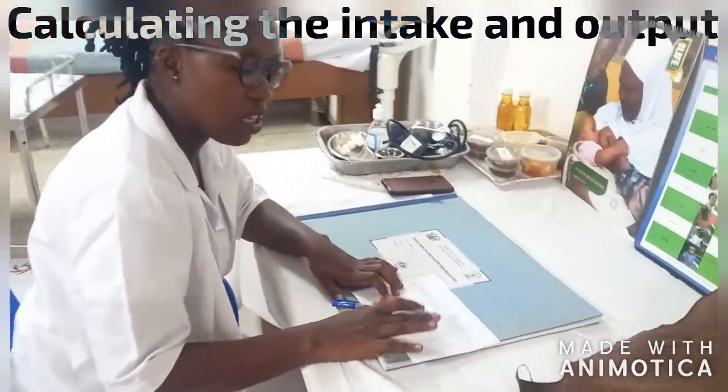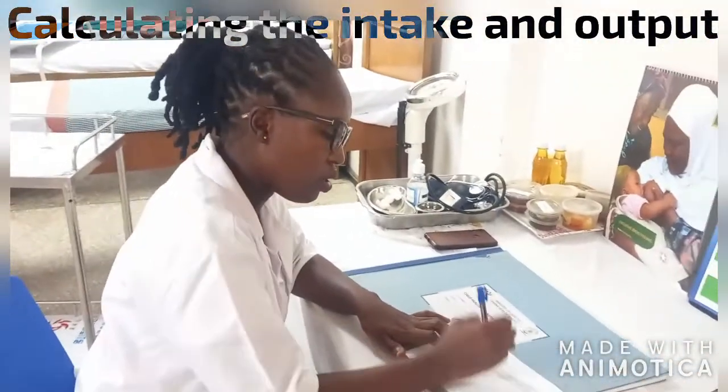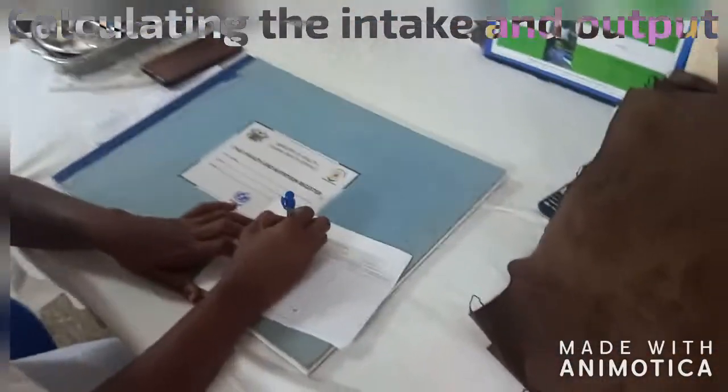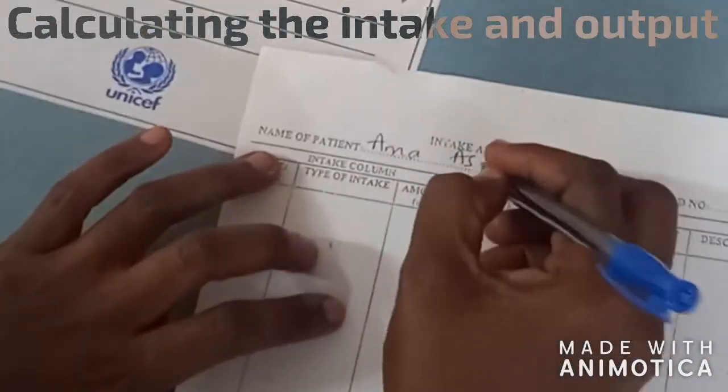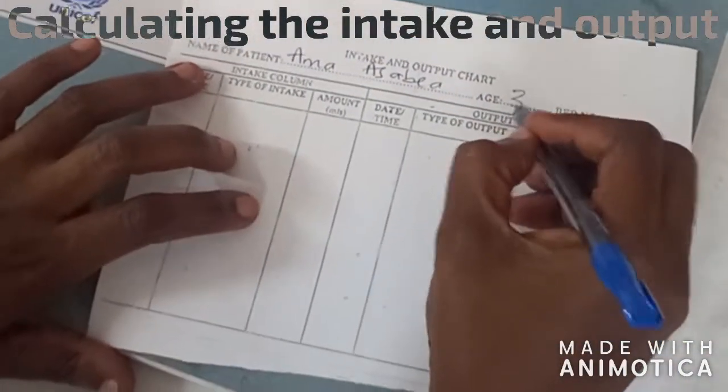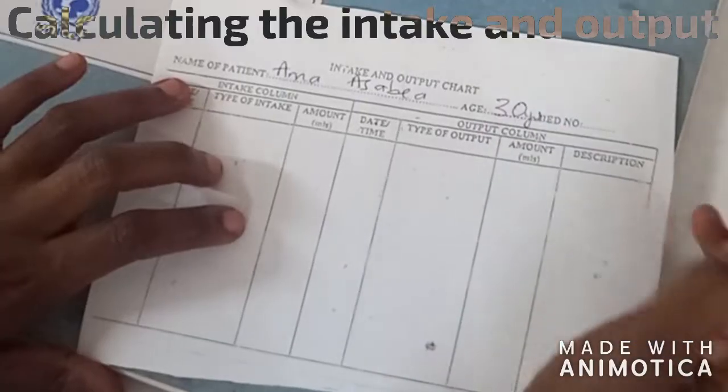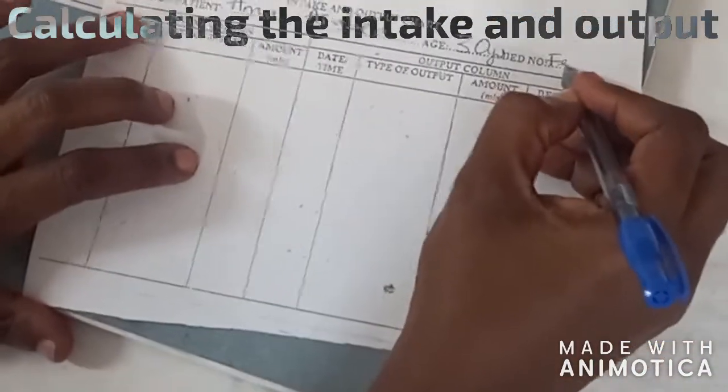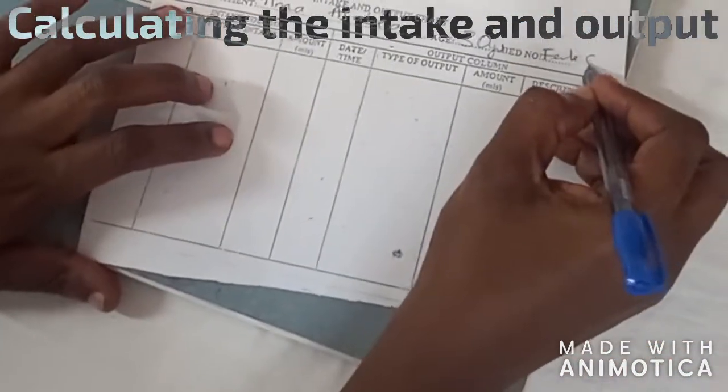So this is the intake and output chart that I'm using. The patient is Amma Asabiya, let's say age 30 years, female, surgical ward.